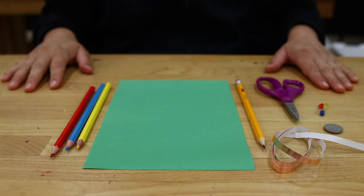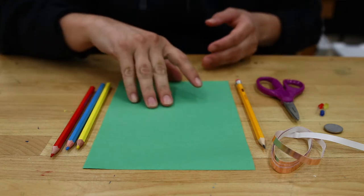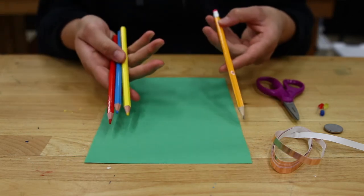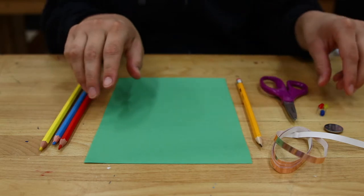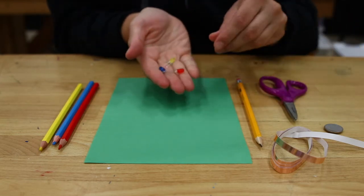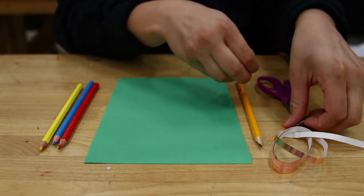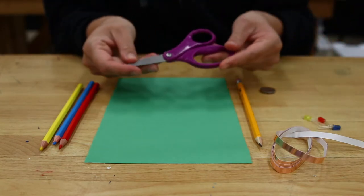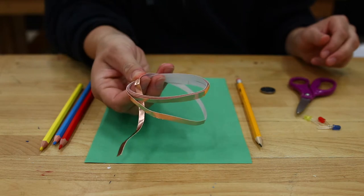We're going to start by gathering our materials. For this project, we're going to need a half sheet of construction paper, some colored pencils and a regular pencil, three LEDs, one coin cell battery, a pair of scissors, and a bundle of copper tape.